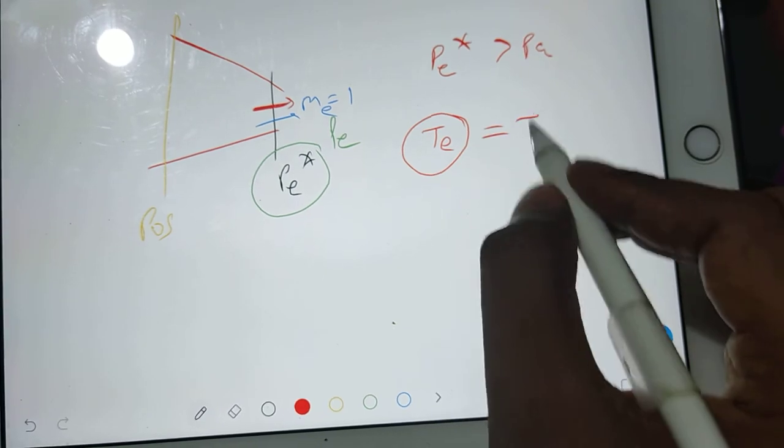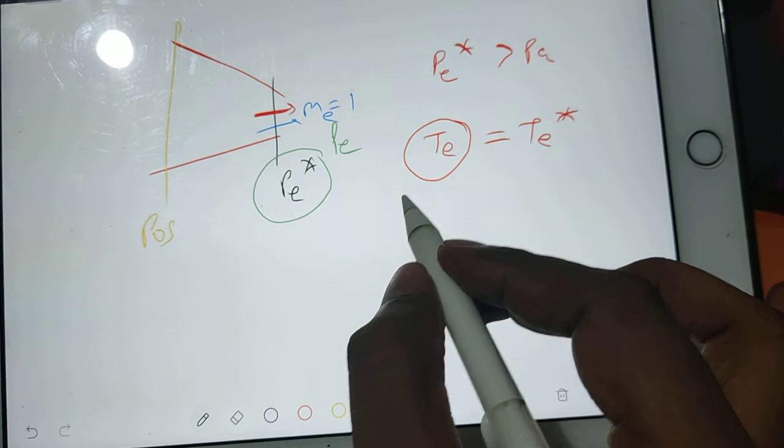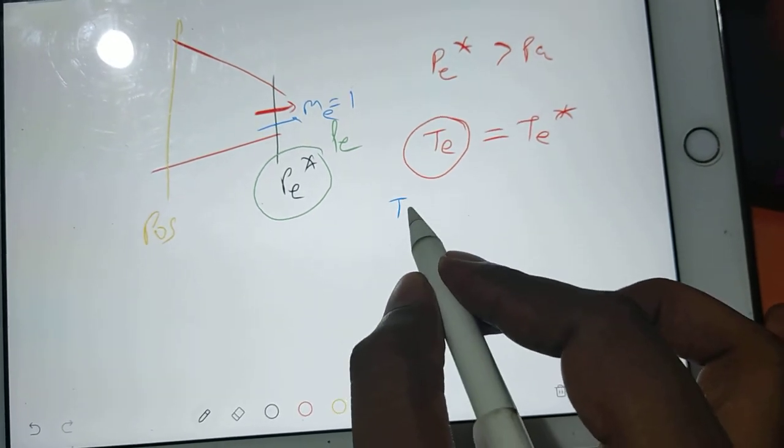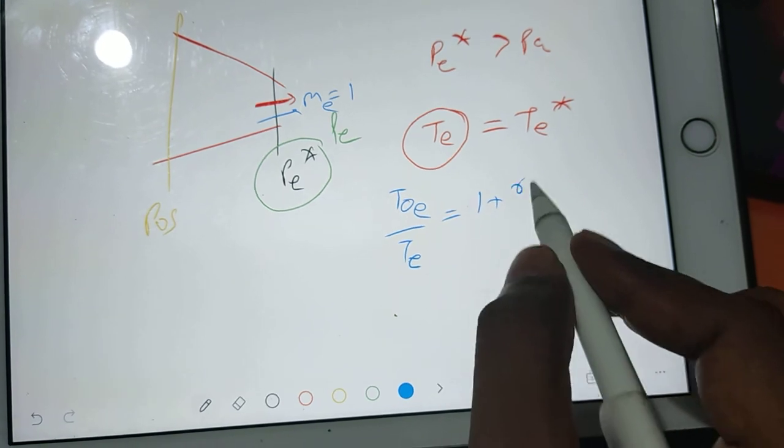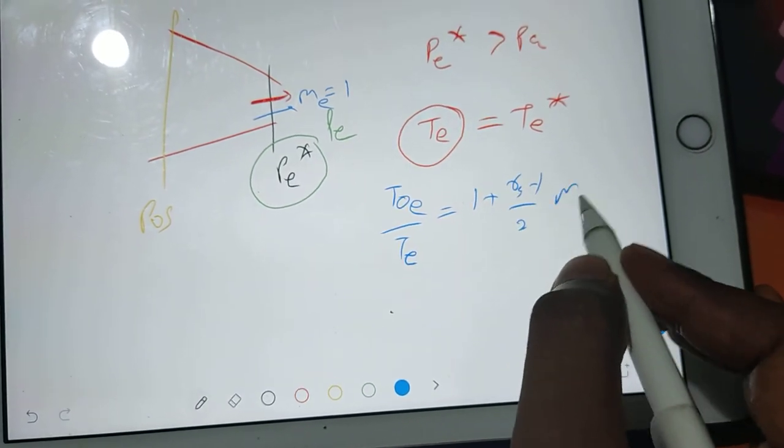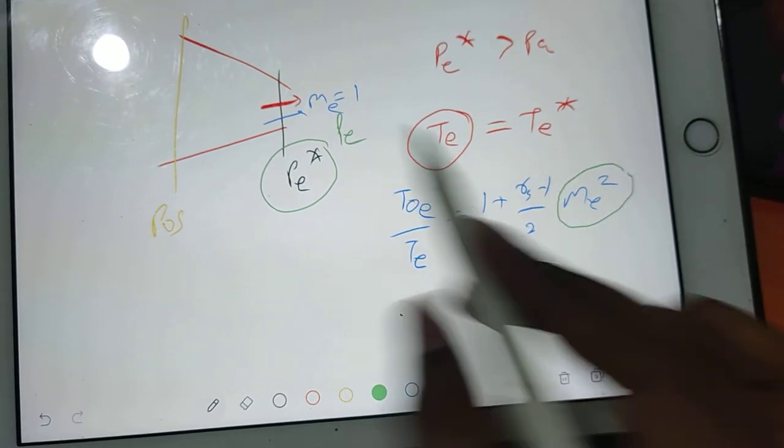So your T will be nothing but te star. And how can you find out te star? Very easy. You know that t not exit by te is equal to 1 plus gamma minus 1 by 2 me square. So here if you substitute me equals 1, because for this condition.